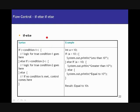The first flow control statement is if-else. The if statement checks for a particular condition — if that condition is true, it executes certain statements; else it executes certain other statements. In the syntax, if condition one is true, execute certain statements. Else if condition two is true, execute some other statements. Else, if none of the above are true, execute certain statements.